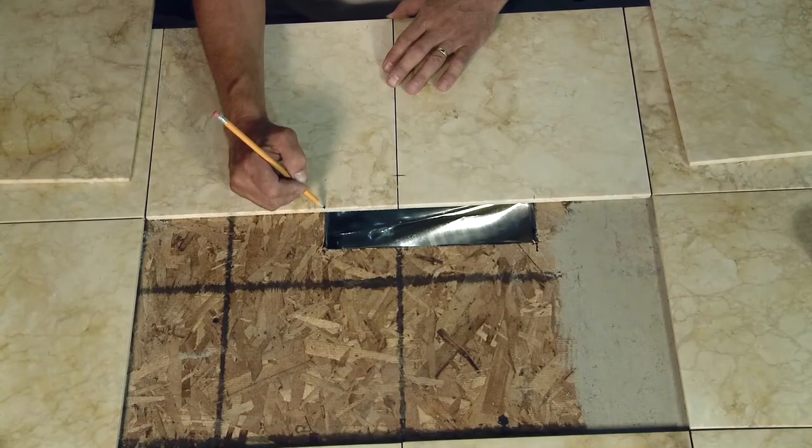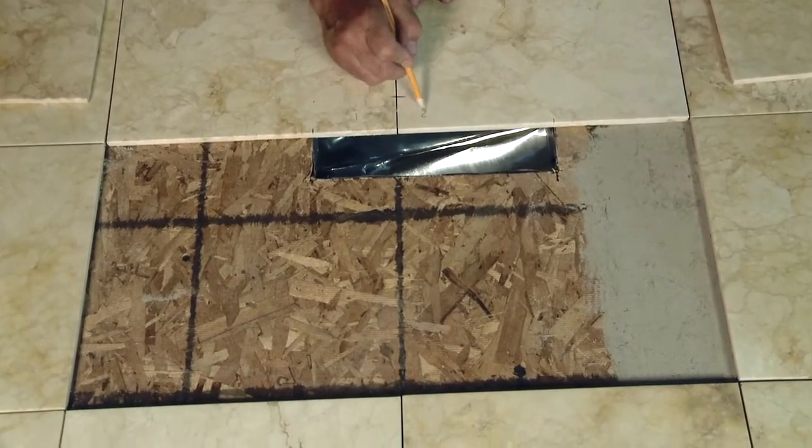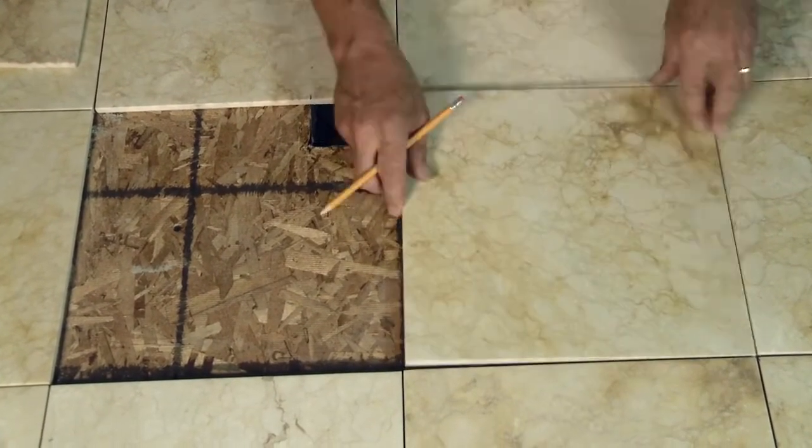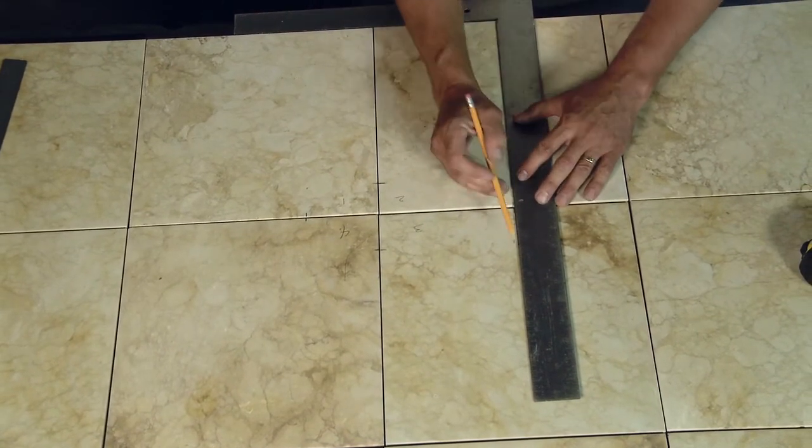Continue to mark all the tiles, you can even number them as you go. I'm actually marking the actual opening size of the vent. This one happens to be 4 by 10.